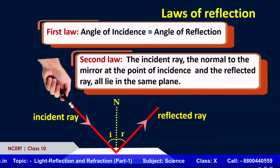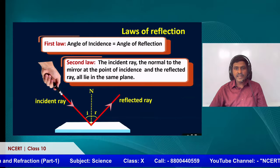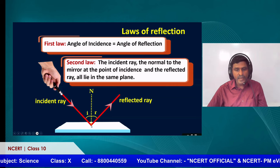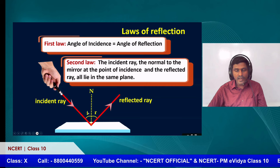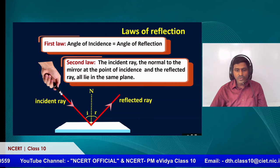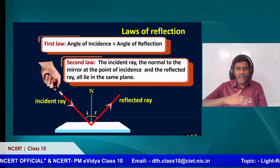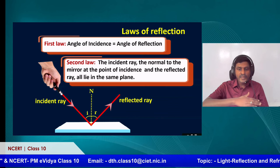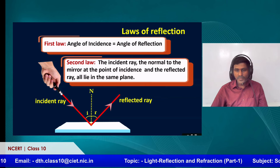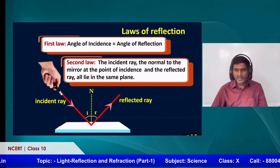The second law states that the incident ray, the normal to the mirror at the point of incidence, and the reflected ray all lie on the same plane. For example, the incident ray, reflected ray, and the normal — these three lie on the same plane. Suppose you are doing an experiment with a glass slab and paper; if you draw the lines, you will get all the lines on the same plane on that paper. These are the two laws which can be applied wherever reflection takes place.